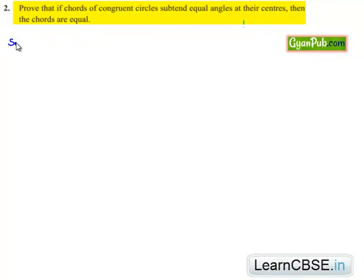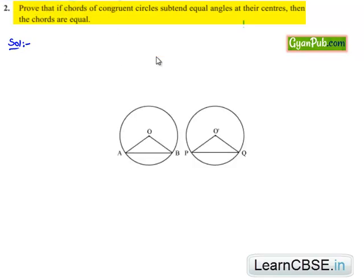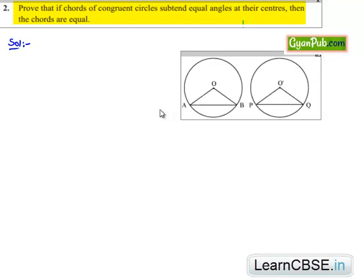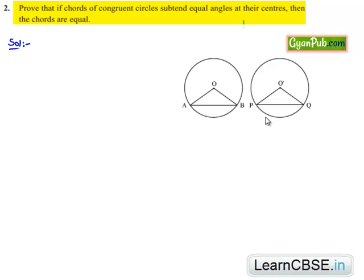Moving on to the solution. Let us consider two circles with centers O and O' respectively, and let AB and PQ be the chords in the two congruent circles which subtend equal angles at the centers — that is, angle AOB is equal to angle PO'Q.